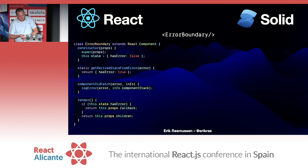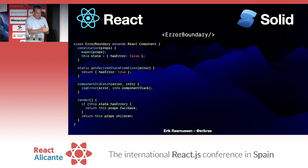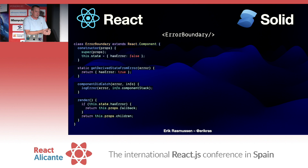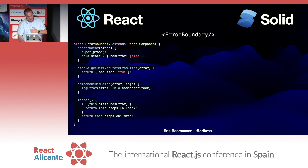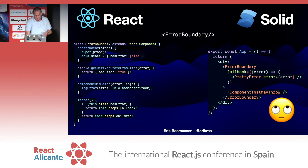In React, you can go to the docs and copy and paste the very last class component — and for every single one of your React projects you need to copy and paste this into your project to catch errors with an error boundary. Solid just implemented it and gives it to you. I don't know why React doesn't do this.